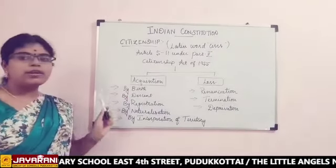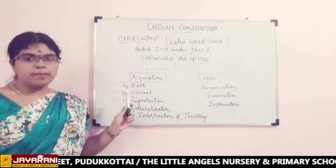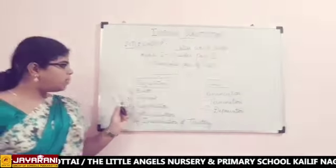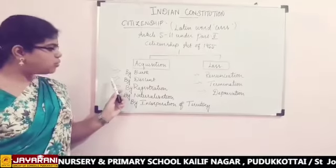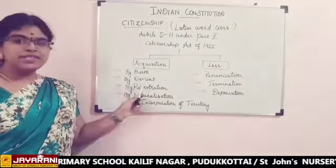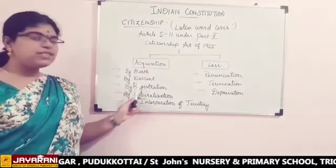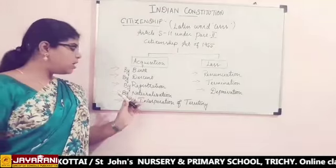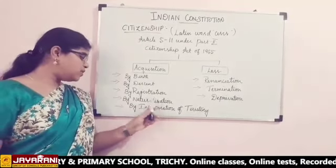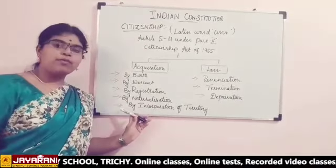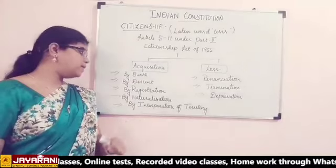There are five categories to acquire the citizenship of India. Number 1: By birth. Number 2: By descent. Number 3: By registration. Number 4: By naturalization. Number 5: By incorporation of territory.